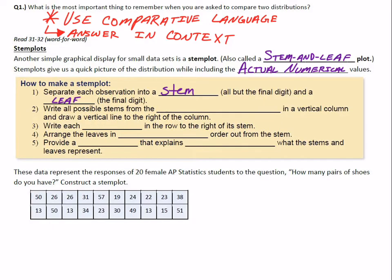The stem is everything except the final digit. The final digit, one digit long, represents our leaves.